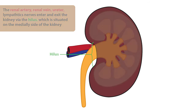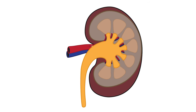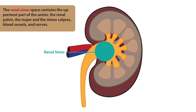The space just inside the kidney is referred to as the renal sinus space. It contains the uppermost part of the ureter, the renal pelvis, the major and minor calyces, blood vessels, and nerves.